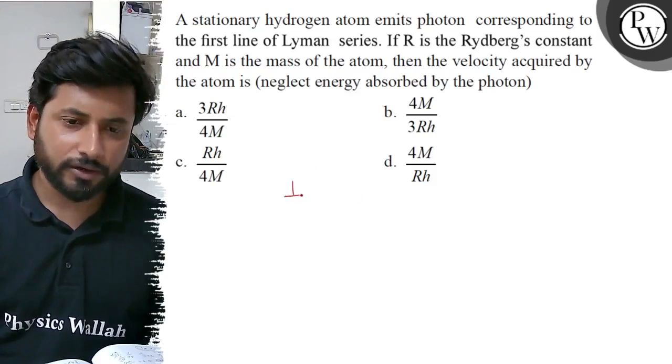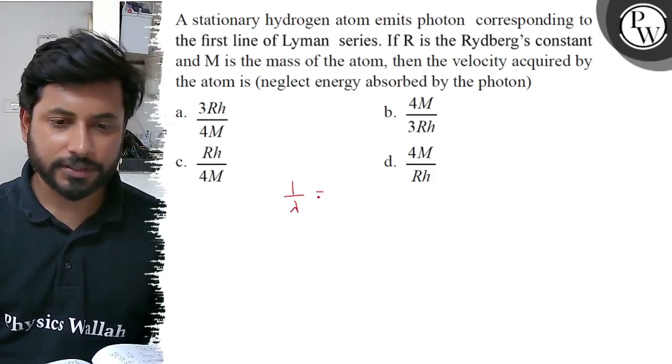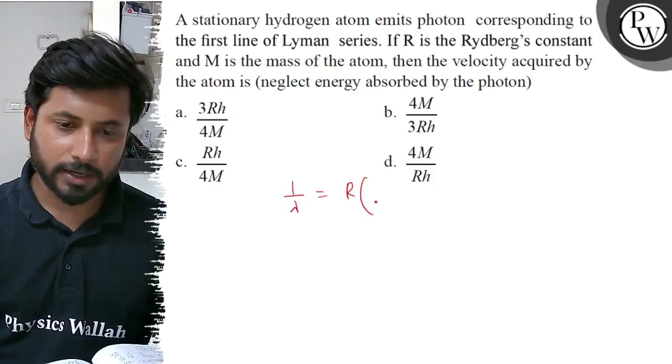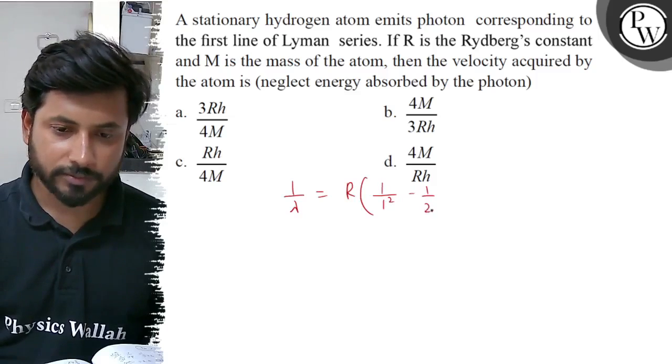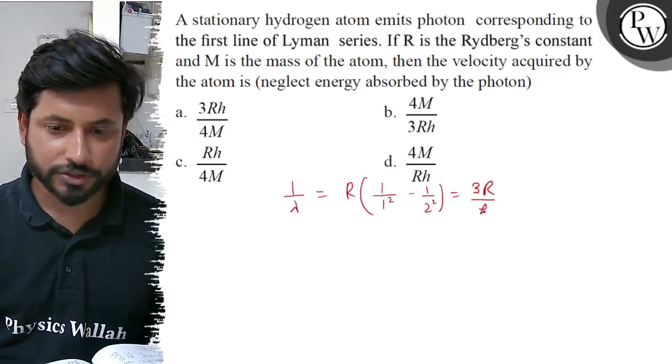So first line of Lyman series, 1 by lambda equals R times 1 by 1 square minus 1 by 2 square, then here will be 3R by 4.